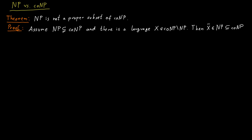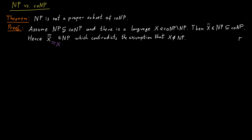But then the complement of X is in co-NP, and therefore the complement of the complement, which is X itself, must be in NP again. And this is a contradiction to the assumption that X is in co-NP but not in NP. So therefore NP cannot be a proper subset of co-NP.